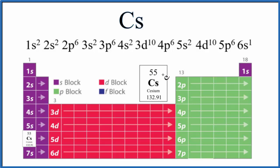And with a neutral element, the number of protons, the atomic number, equals the electrons. So we have 55 electrons for Cs, and we're going to distribute those around the nucleus. That's what the electron configuration is all about.